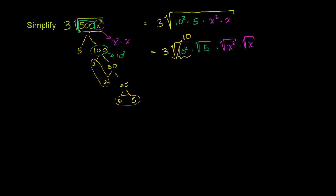For the square root of x squared, you might be tempted — and I've seen this done many times — to just say that's simply x. But what if x is negative? Let's say x was negative 2. Then x squared would be 4, and the principal root of 4 equals positive 2. So you can't just say this equals x; it actually equals the absolute value of x. That's what the principal root does for us — regardless of whether x is positive or negative, we get the positive square root.